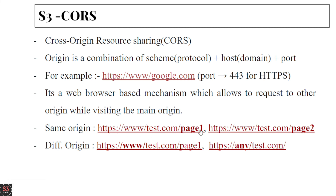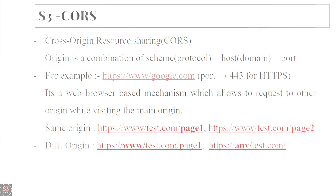For same origin, the whole link is the same but only the pages are different — so the origins are the same. For different origin, only the subdomain differs: one uses 'www' and the other uses 'any', making them different origins. Now let's see the working of Cross Origin Resource Sharing.